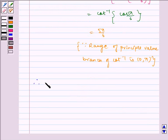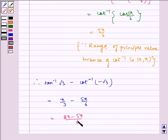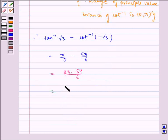Therefore, tan inverse of root 3 minus cot inverse of minus root 3 is equal to pi by 3 minus 5 pi by 6, which is equal to 2 pi minus 5 pi by 6, which is equal to minus 3 pi by 6, which is equal to minus pi by 2.